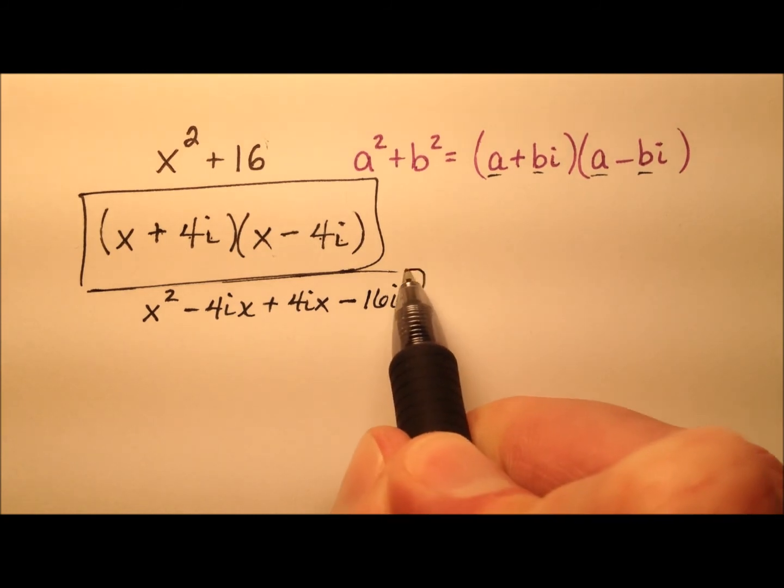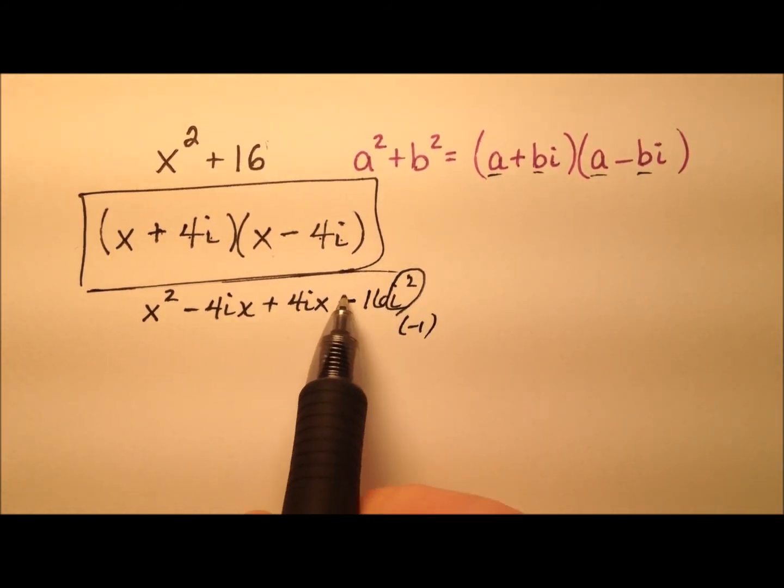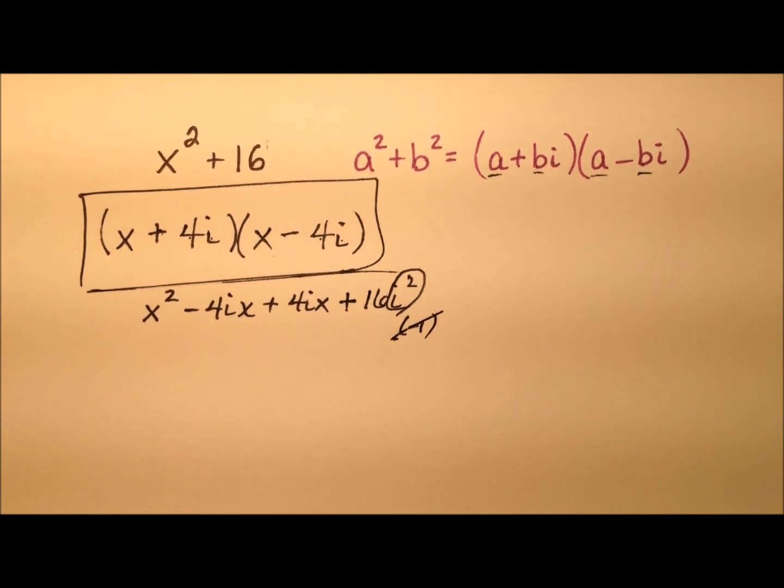And then the positive 4i times the negative 4i is going to give us negative 16i squared. Well, the i squared we know is actually negative 1, so it'll make this negative 16 become a positive 16.